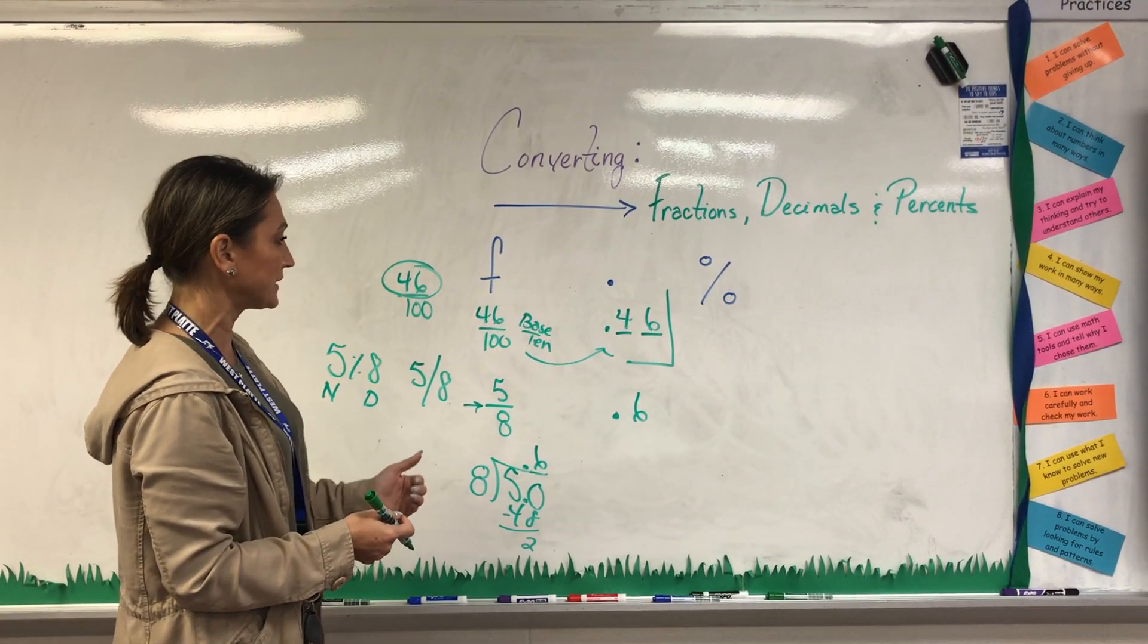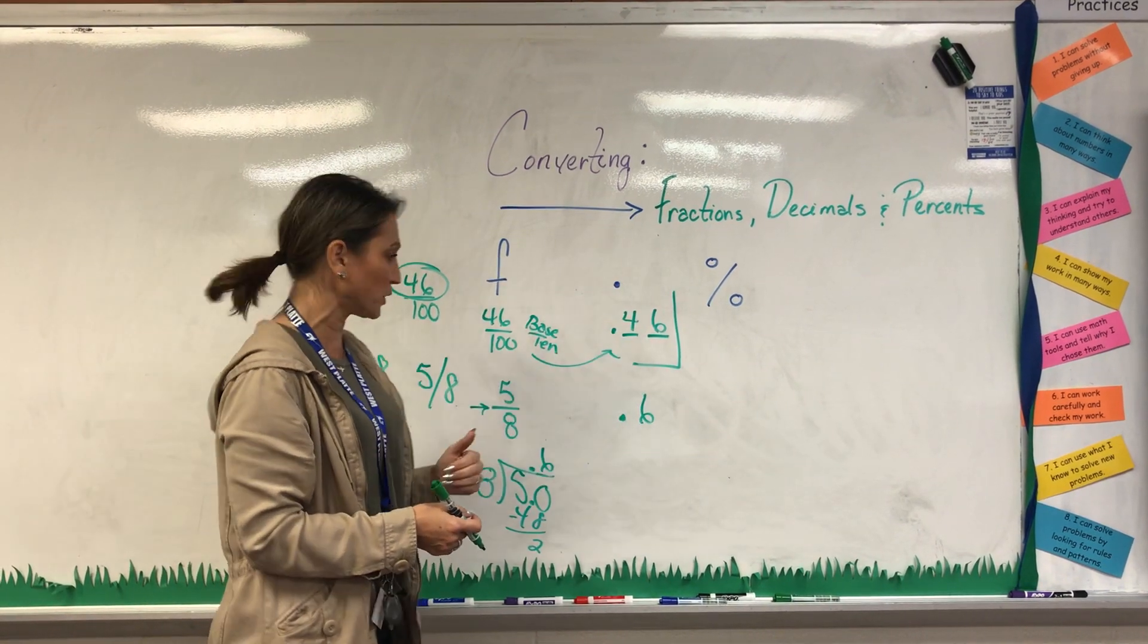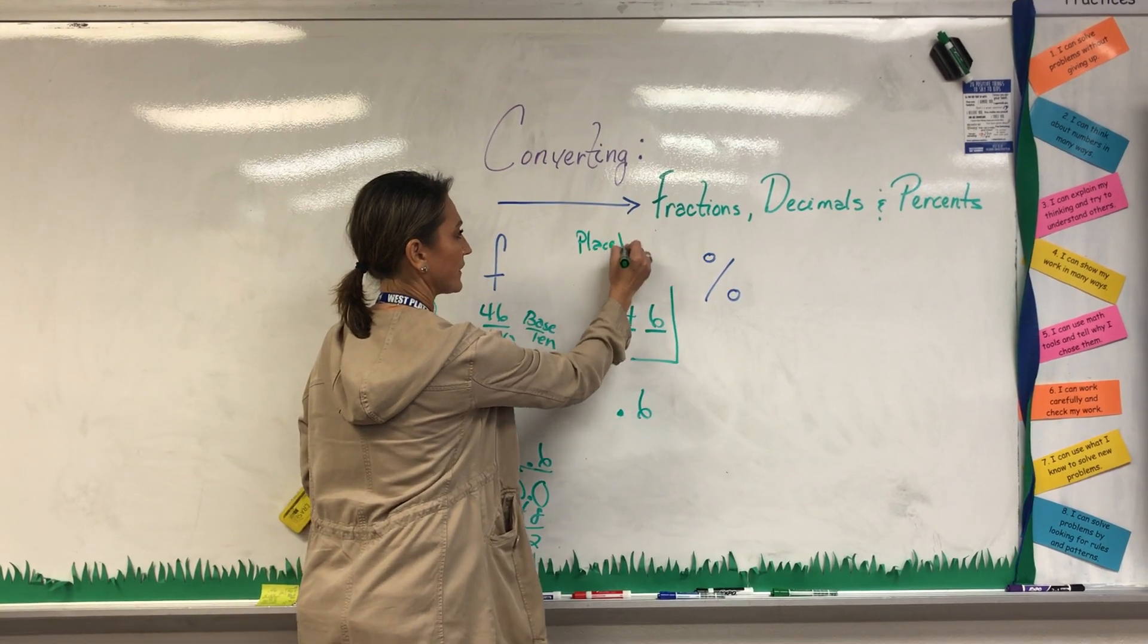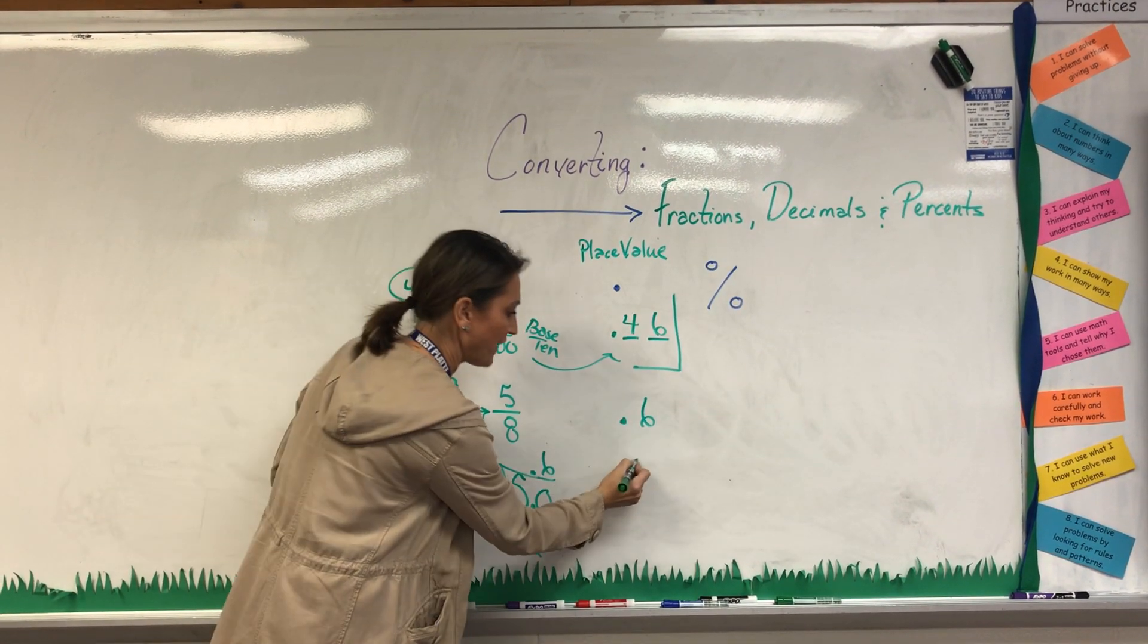So here's my fractions. I can turn them into decimals using base 10, looking at place value, or I can use division.